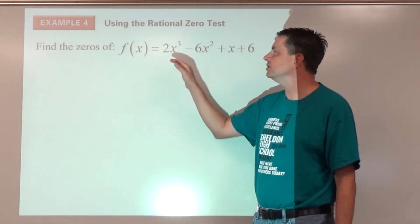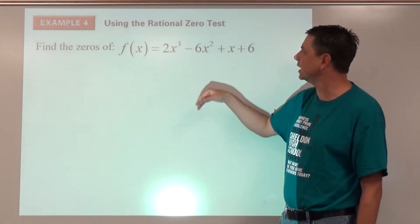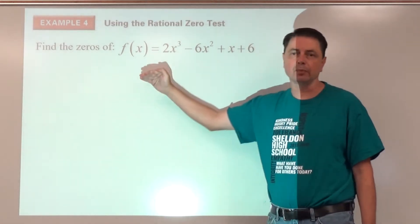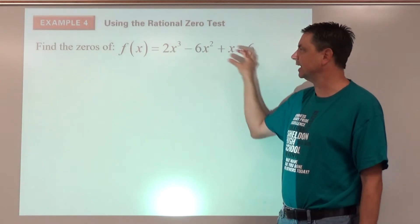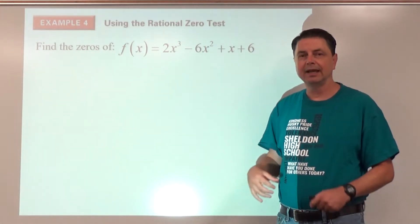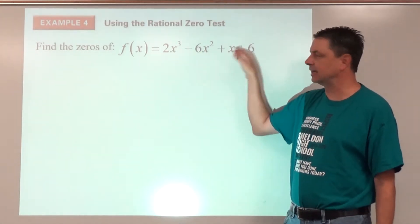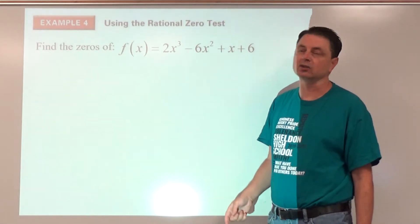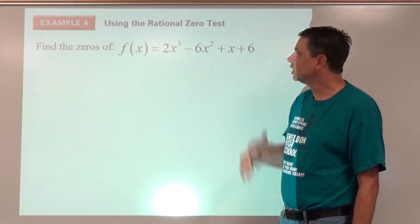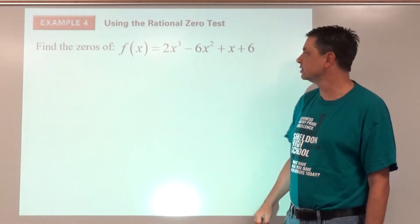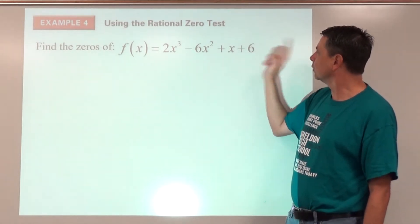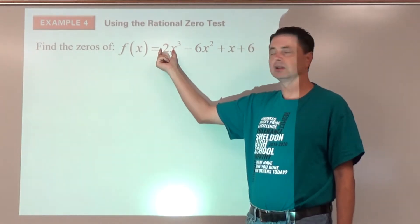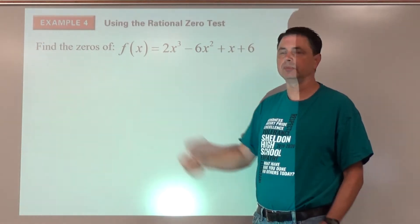Example number four: find the zeros of f of x equals 2x³ minus 6x² plus x minus 6. Your first thought might have been to factor by grouping, and it's a good strategy — it just doesn't happen to work on this polynomial. So if we use the rational zero theorem, we list all the factors of six as our p's, and all the factors of two as our q's.